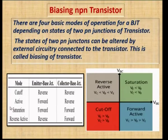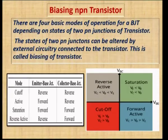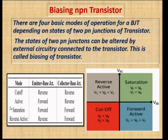Next we move on to the very important topic of biasing of NPN Transistor. There are four basic modes of operation: cutoff mode, active mode, saturation mode, and reverse active mode. These four modes depend on the states of the two PN junctions of the transistor, which can be altered by external circuitry.